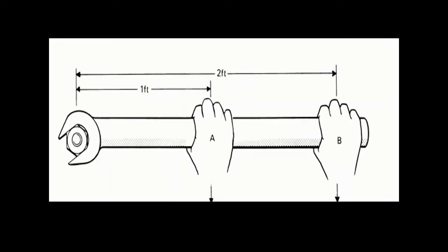If you are trying to undo this nut, put your hand in position B. It's going to be much easier for you to undo the nut than in position A.